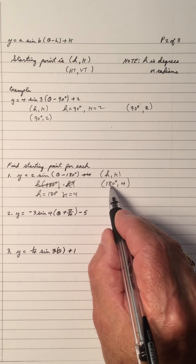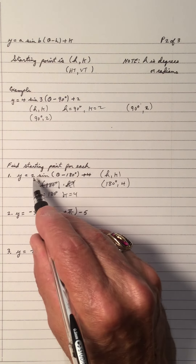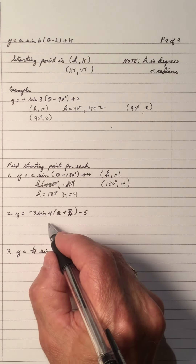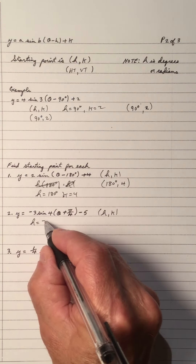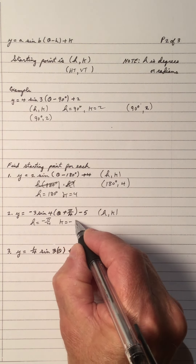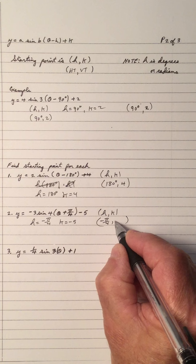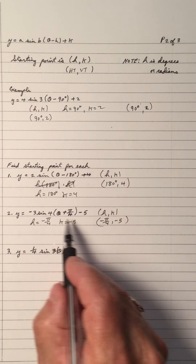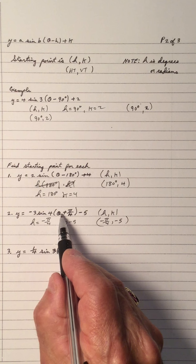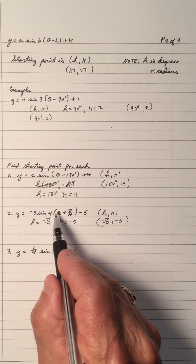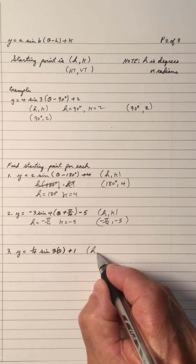Take the 180 and sub it in — that gives you 0. The sine of 0 is 0. 2 times 0 is 0, and you get the 4. And for the next example, the H is the opposite of pi over 4, which is negative pi over 4. The K is negative 5. So the starting point is negative pi over 4 as a radian and negative 5. If you take the opposite and put negative pi over 4 in, you get 0. 4 times 0 is 0. The sine of 0 radians is 0. Negative 3 times 0 is 0. And you get negative 5.